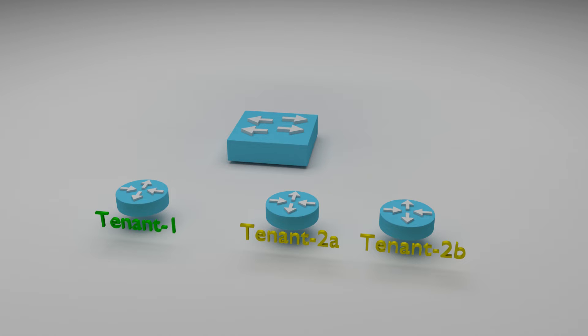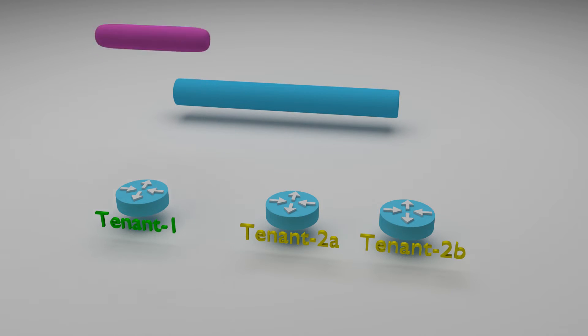The constraint is that the two tenants should not be able to see each other. Tenant 2 however has two routers and these two routers should be able to work together. There is a shared router which is the default gateway for the management interfaces on all other routers. So all the devices should be able to reach it.